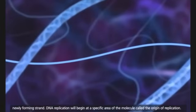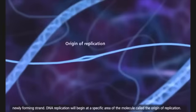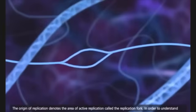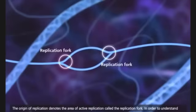DNA replication will begin at a specific area of the molecule, called the origin of replication. The origin of replication denotes the area of active replication, called the replication fork.